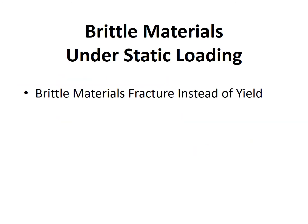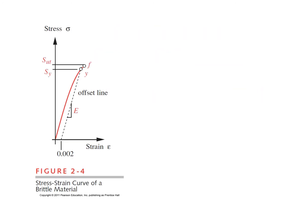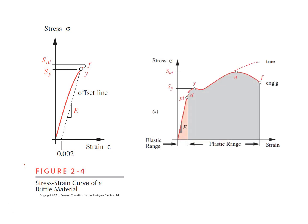Now let's look at materials that are brittle under static loading. Brittle materials fracture instead of yield. Looking at the stress-strain curve of a brittle material, the material follows the curve and then shortly after yield, we get fracture. Comparing with a ductile material, the ductile material has a large strain and large deformation before failure. That is the key difference between a brittle and a ductile material.